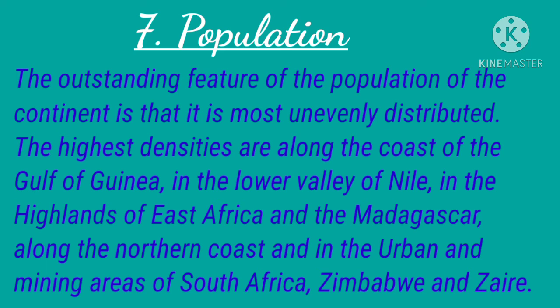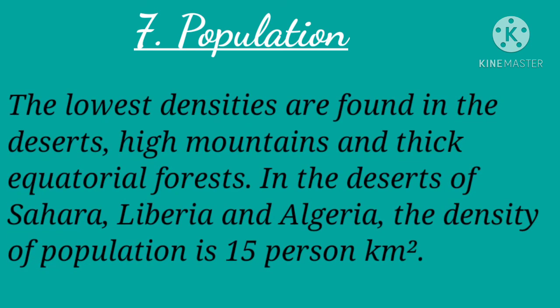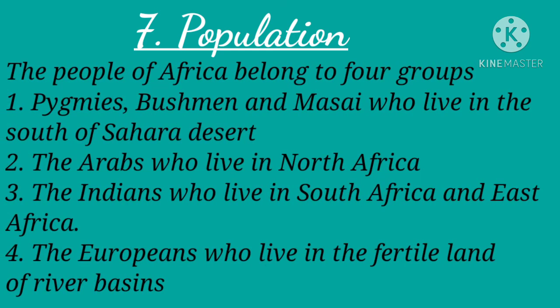High densities are also along the northern coast and in the urban and mining areas of South Africa, Zimbabwe, and Zaire. The lowest densities are found in deserts, high mountains, and thick equatorial forests. In the Sahara, Libya, and Algeria, the density of population is 15 persons per square kilometer. The people of Africa belong to four groups: the Pygmies, Bushmen, and Maasai who live south of the Sahara; the Arabs in north Africa; the Indians in south and east Africa; and the Europeans in the fertile river basins.